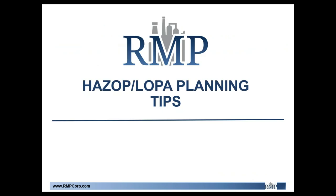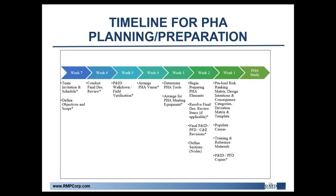Moving on to some HAZOP planning tips. I have a nice timeline for you. During week seven, the most important thing is to invite every team member and start scheduling things appropriately. If you don't get on these busy people early on, you're not going to get those key players that you really need in these important sessions. You also need to define objectives and scope early on so you have a well-laid-out timeline and are properly prepared.